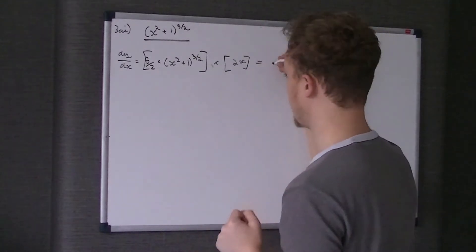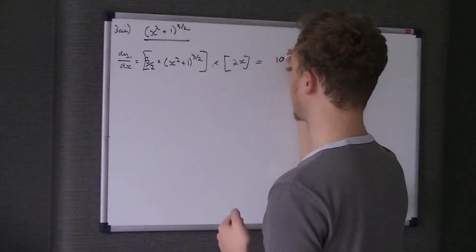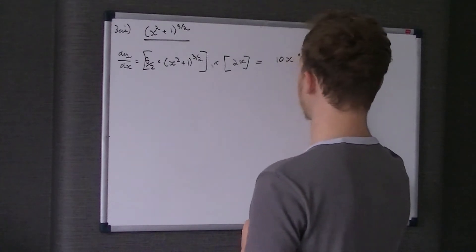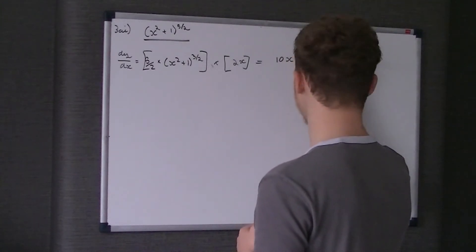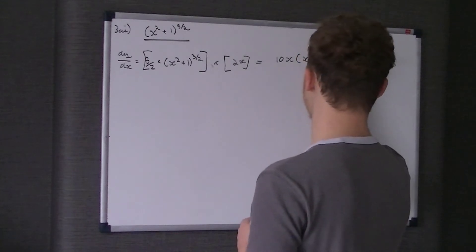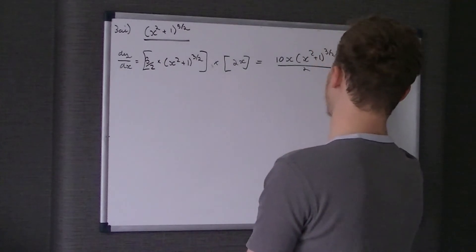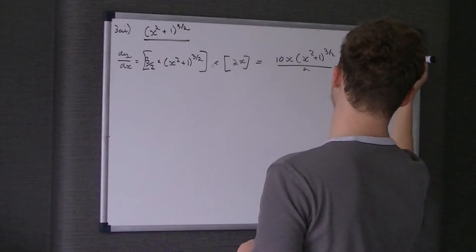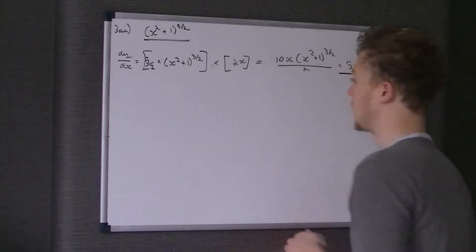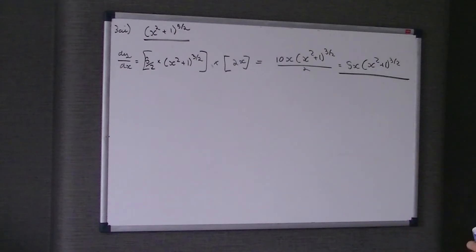So we get (5/2)(x² + 1)^(3/2) times 2x. That's 10x(x² + 1)^(3/2) over 2, which cancels down to 5x(x² + 1)^(3/2). Hopefully that's been nice and simple.